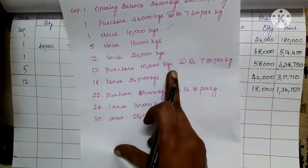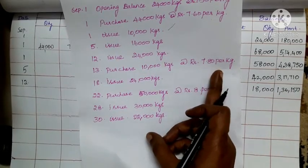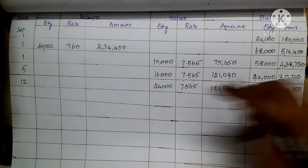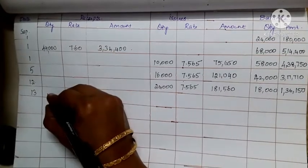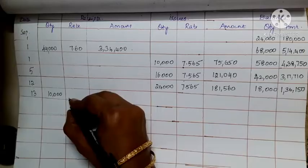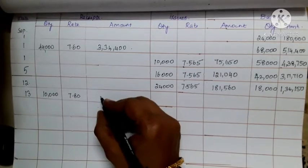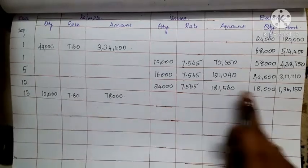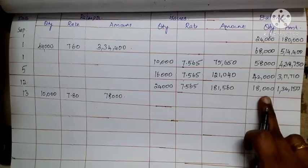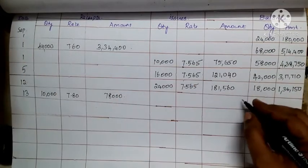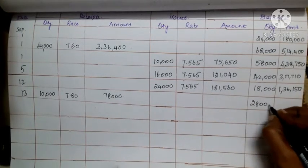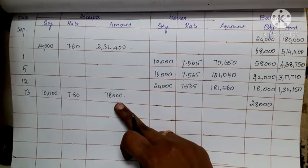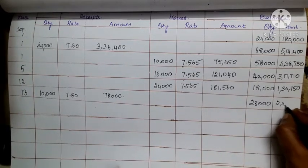Date 13: purchase of 10,000 kg at Rs. 7.80 per kg. The amount is 10,000 multiplied by 7.80 equals 78,000. Add to the existing balance of 18,000 units: new balance is 28,000 units. The amount 1,36,150 plus 78,000 equals 2,14,150.